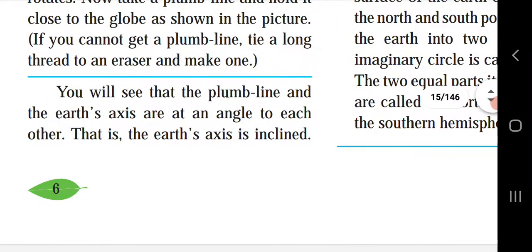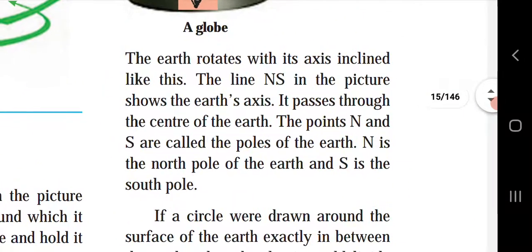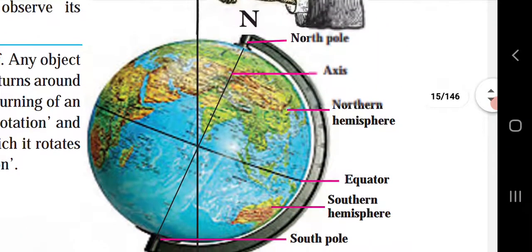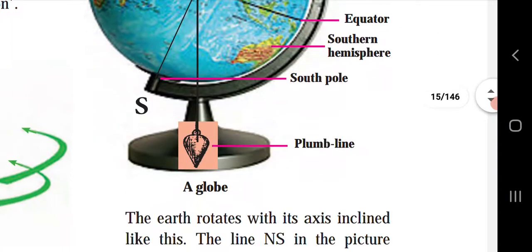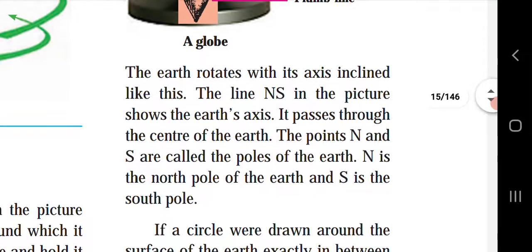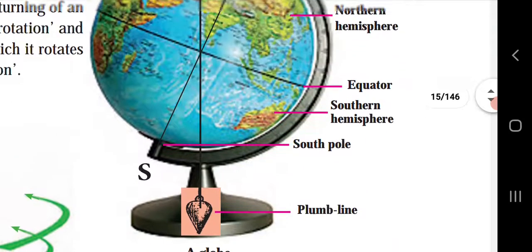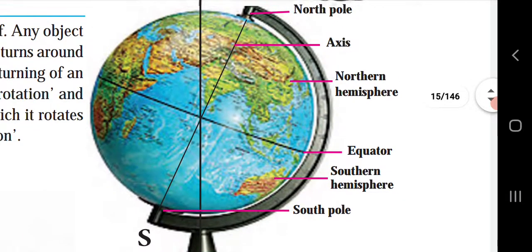You will see that the plumb line and the earth's axis are at an angle to each other — that is, the earth's axis is inclined. The earth rotates with its axis inclined like this. The line NS in the picture shows the earth's axis, where N is the North Pole and S is the South Pole. This axis passes through the center of the earth.